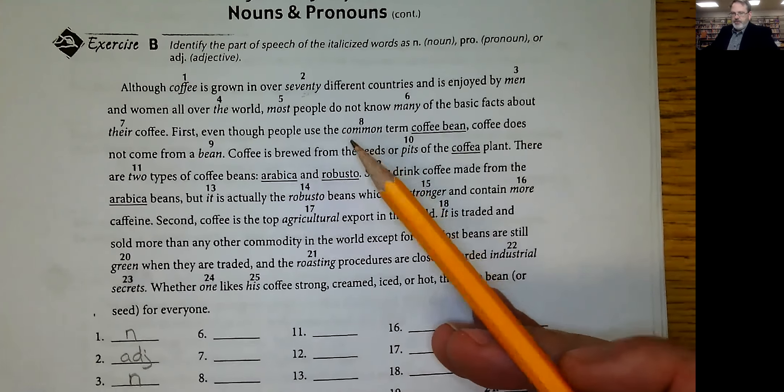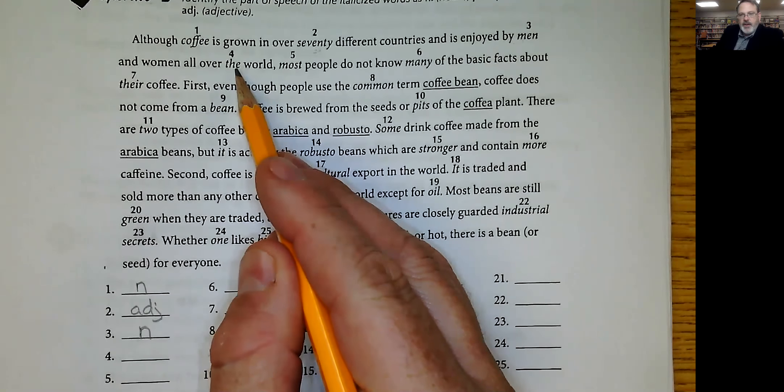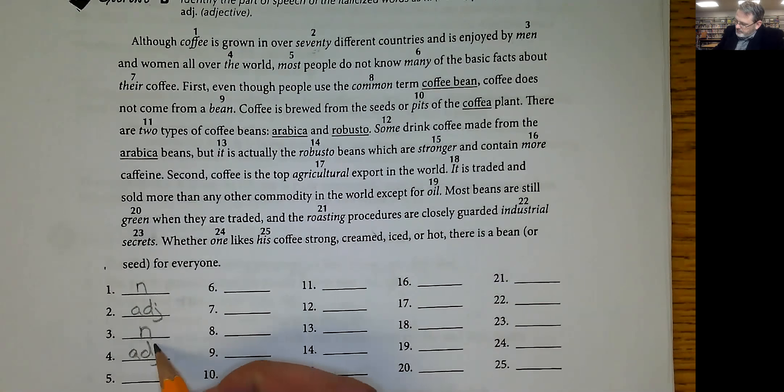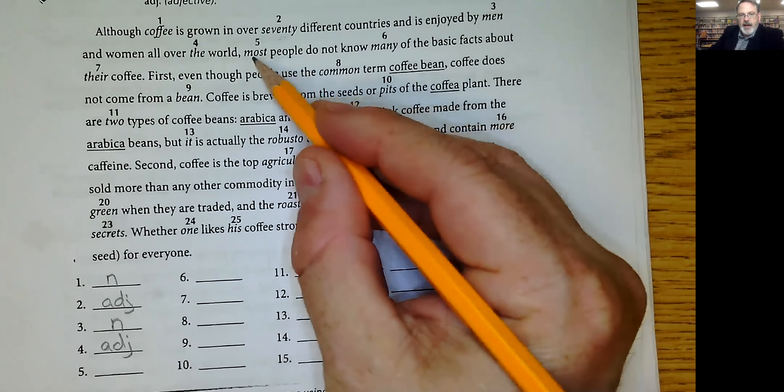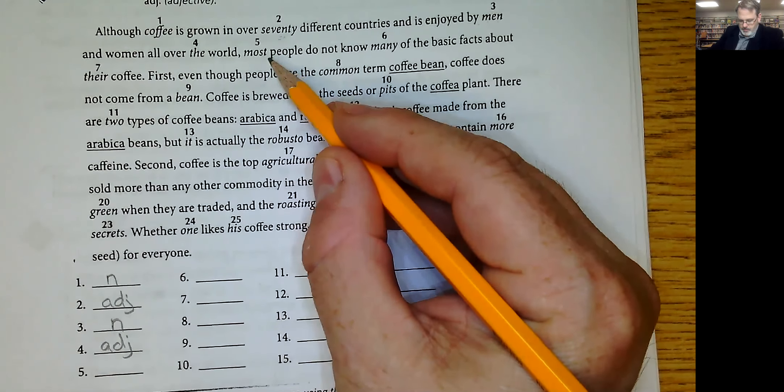All over the world. Well, A-N-D are called articles, they're always adjectives. Most people, how many people, that's an adverb, sorry that's adjective. Which one, what kind, how many, how much, and whose.